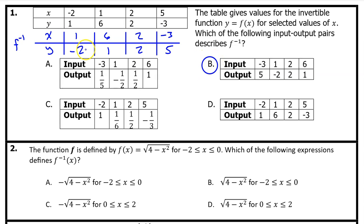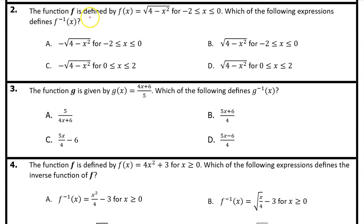Notice how we have the point negative 3 comma 5 and then the point 1 comma negative 2 and so on. Number 2: the function f is defined by f of x equals the square root of 4 minus x squared on the closed interval from negative 2 to 0. Which of the following expressions defines f inverse of x?